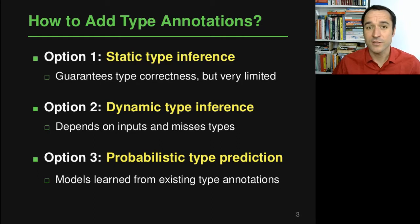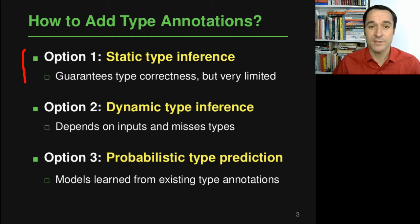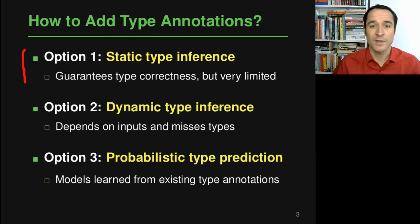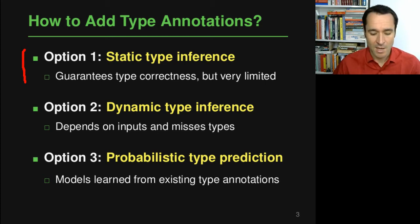There are essentially three options. Option one is static type inference — a static analysis that typically works conservatively, so whenever it suggests a type, that type is guaranteed to be correct. But in practice these tools are pretty limited because dynamic languages are inherently hard to analyze.